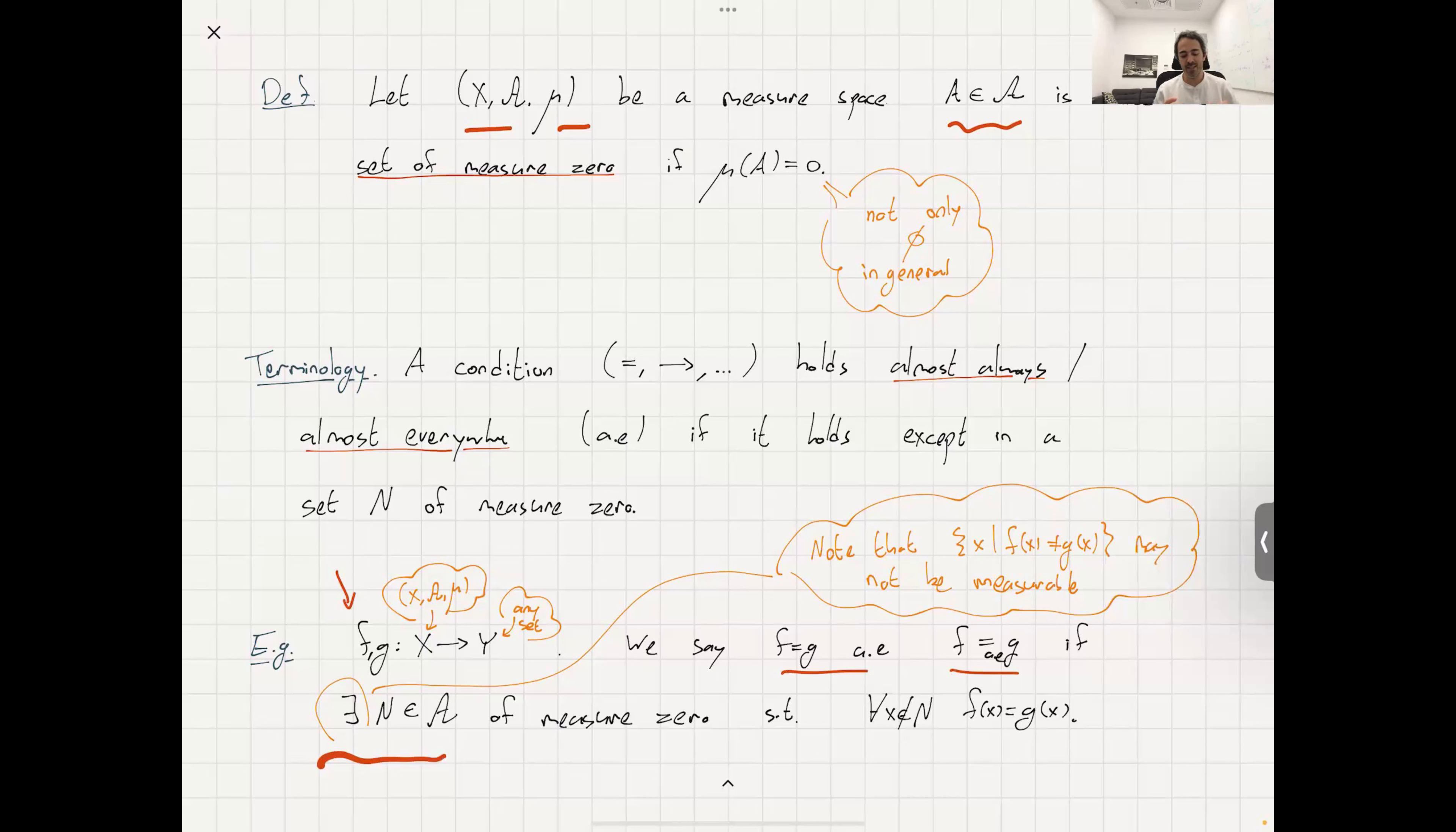So namely, there is a set. It has measure zero, so you don't see it by the measure. The measure doesn't even see it, outside of which they are equal. So in that sense, we say that F and G are equal almost everywhere because the places where they don't agree are contained in a set of measure zero.